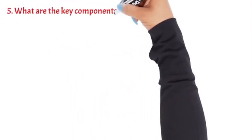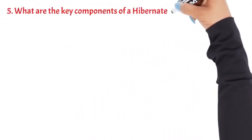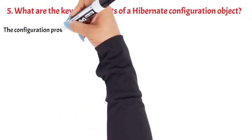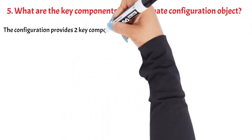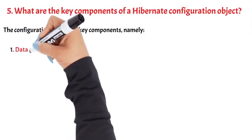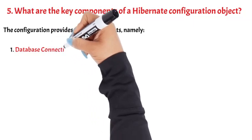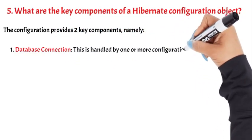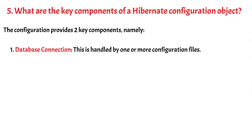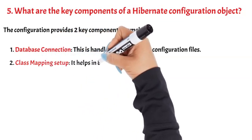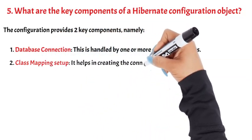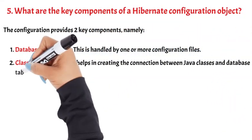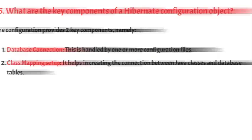Question 5: What are the key components of a Hibernate configuration object? The configuration provides two key components: first, Database Connection — this is handled by one or more configuration files; second, Class Mapping Setup — it helps in creating the connection between Java classes and database tables.